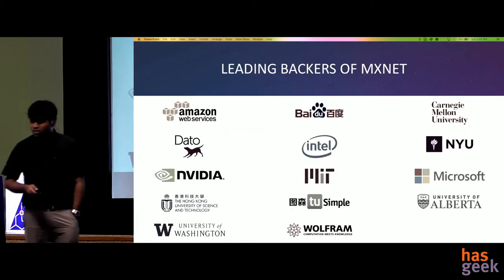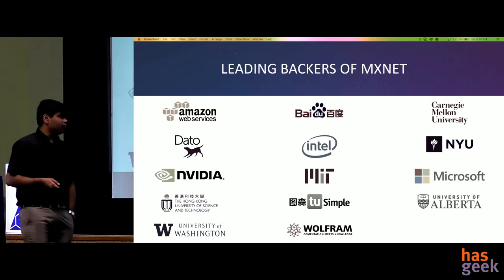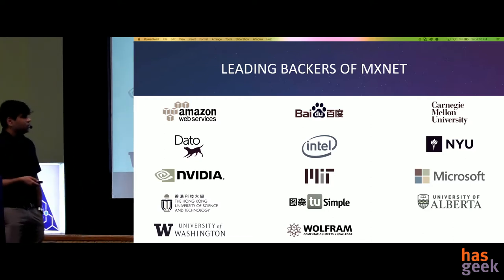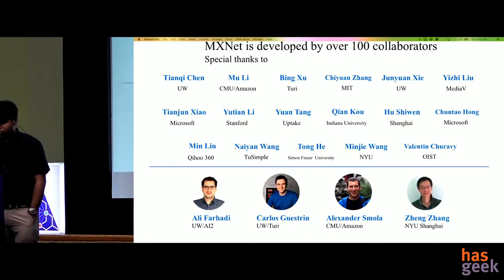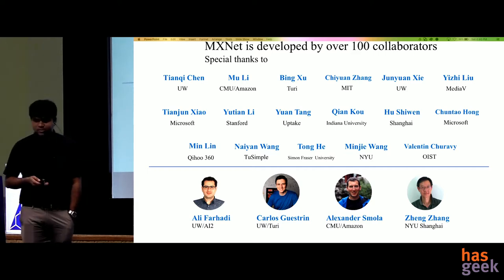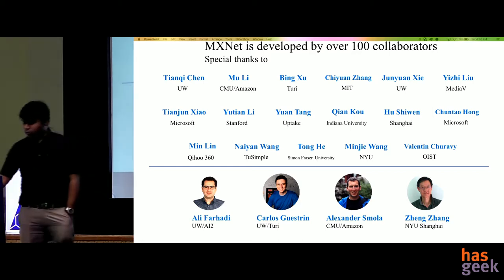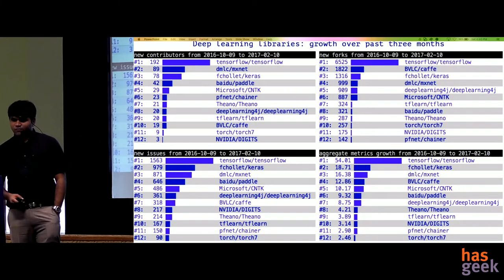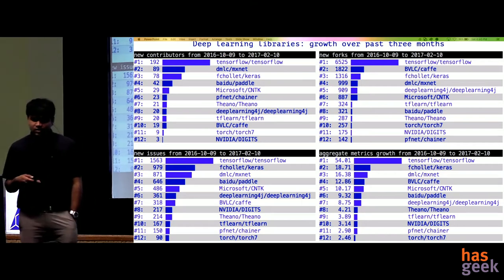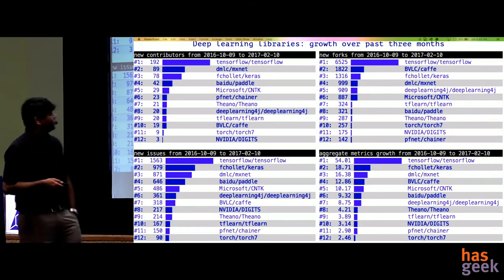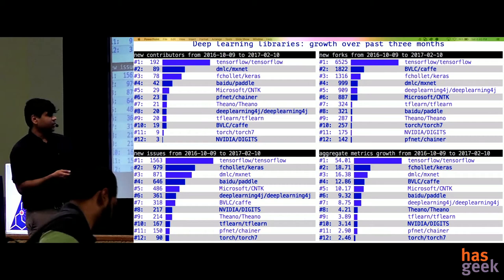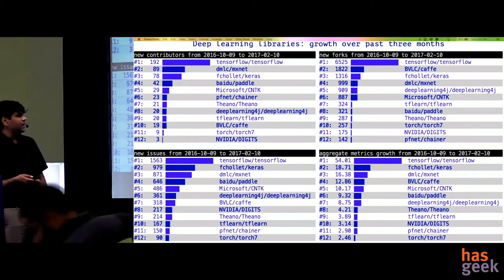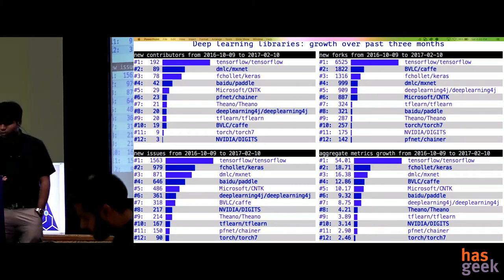Let us see who the backers of this project are. You will see a lot of prominent names, including Amazon — companies and universities behind this project. This is a list of top MXNet collaborators. Since it's an open source project, we want to honor their contributions. MXNet is a pretty healthy framework in terms of activity, new features, bug fixes, and requests. It is not at the level of TensorFlow, which is much more popular, but it is coming up rapidly, consistently at number three.